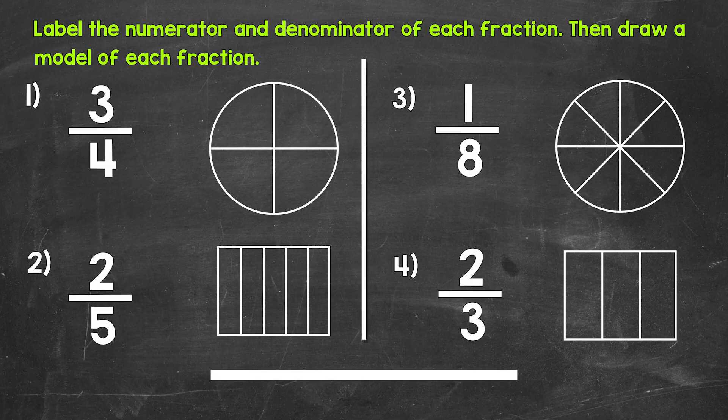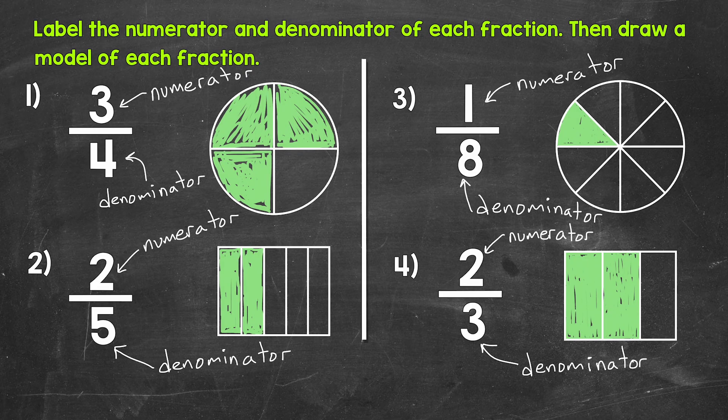Okay, so that's two minutes. Let's take a look at the answers. The numerator is going to be the top number of each fraction, and the denominator is going to be the bottom number of each fraction. For number one, we have four equal parts with three shaded in. For number two, we have five equal parts with two shaded in. For number three, we have eight equal parts with one shaded in. And then lastly, for number four, we have three equal parts with two shaded in.